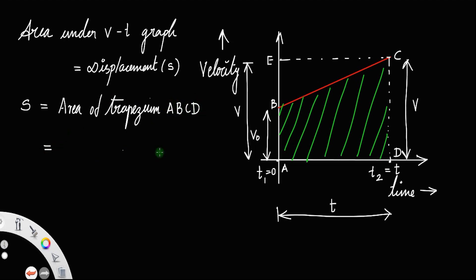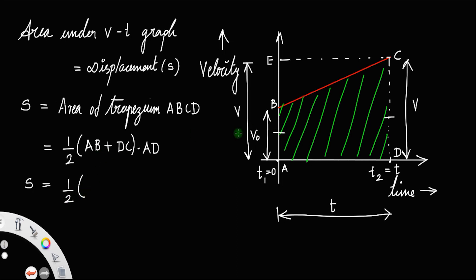How do we find the area of a trapezium? The formula is half times the sum of the parallel sides, times the distance between the parallel sides. Here the parallel sides are AB and CD, so s equals half times (v₀ + v) times t.